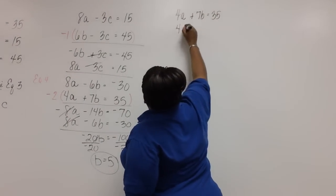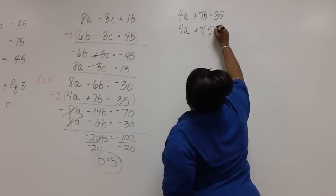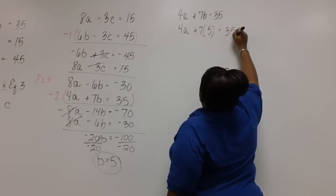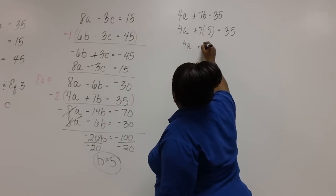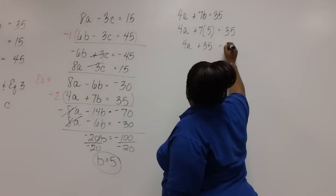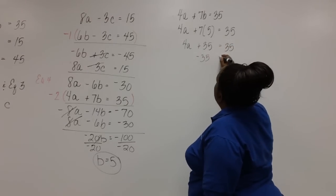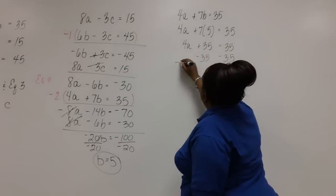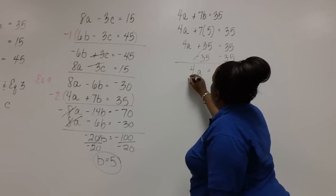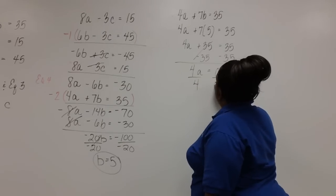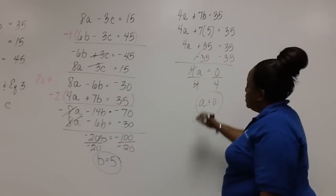So I have 4A plus 7 times 5 equals 35. Now we just need to simplify. Subtract 35 from both sides. And we get 4A equals zero. And after dividing both sides by four, we find that A is equal to zero.